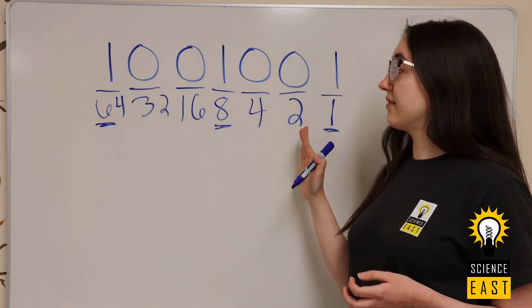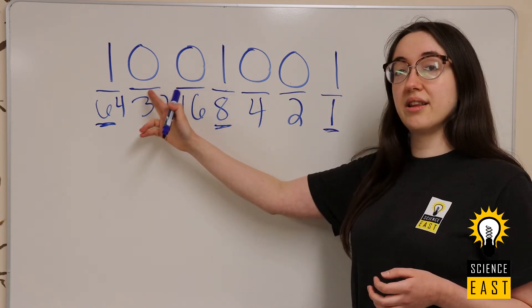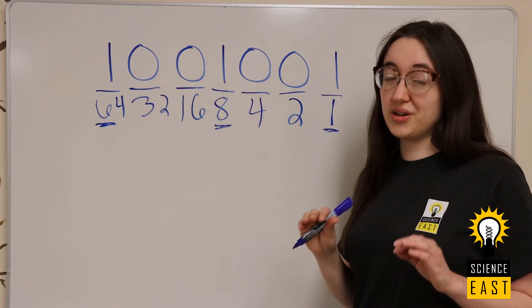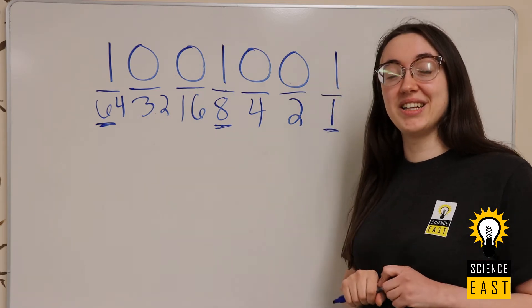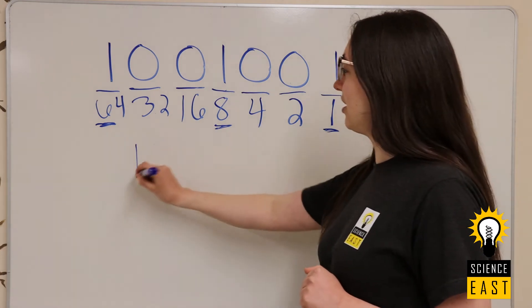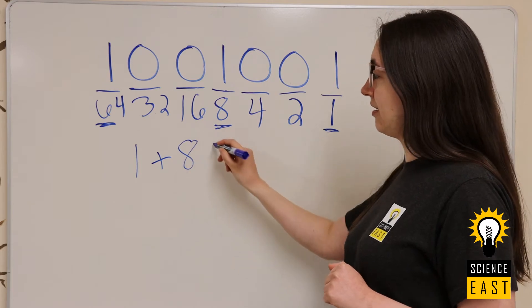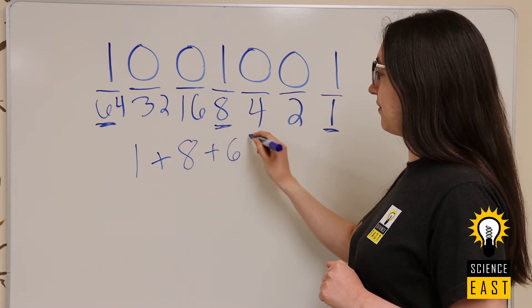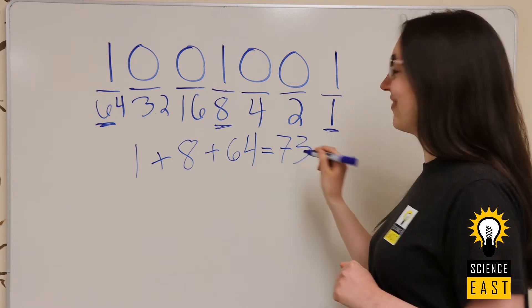The rest of the values 2, 4, 16, and 32 are represented by the digit 0, and so those are off. Next, we just have to add up the values that are on and we'll get our number. So we have 1 plus 8 plus 64 which gives us 73.